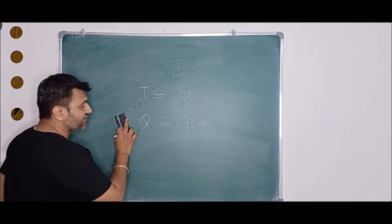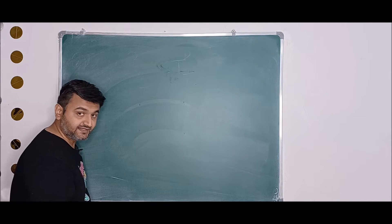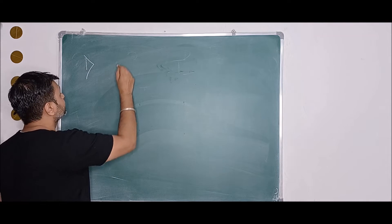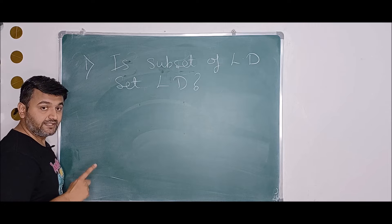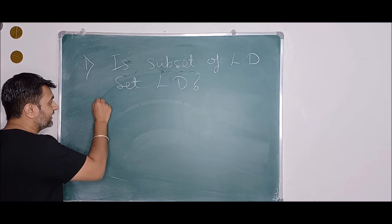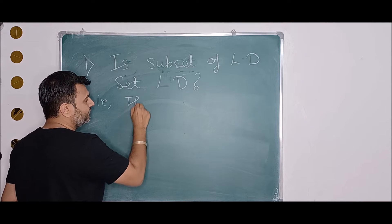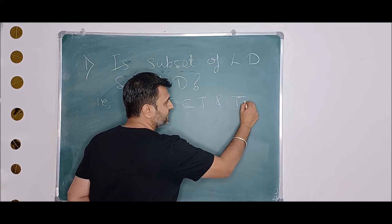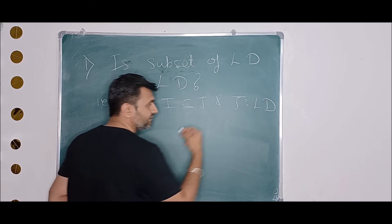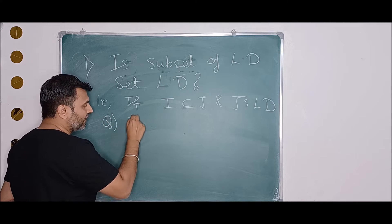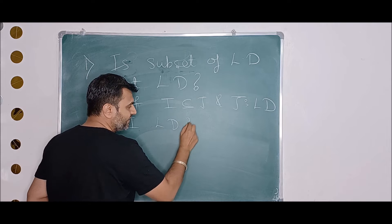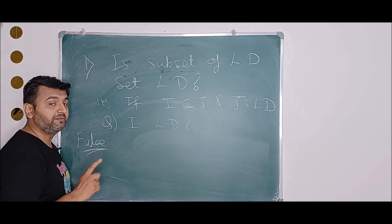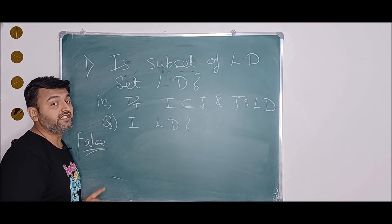For two of these questions the answer is true, and for two the answer is false. Let's go one by one. The first question is: is a subset of a linearly dependent set linearly dependent? That is, if I is a subset of J and J is linearly dependent, is I also linearly dependent? The answer is false — a subset of a linearly dependent set need not be linearly dependent.